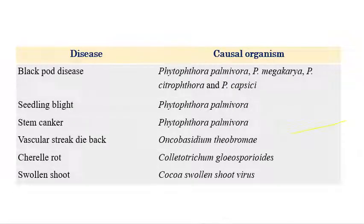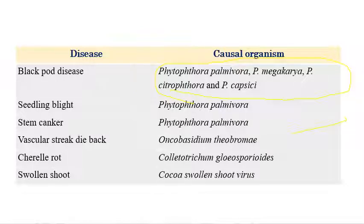These are the important diseases in cocoa. The first one is Black Pod disease, caused by various species of Phytophthora: P. palmivora, P. megakarya, P. citrophthora, and P. capsici. Seedling blight and stem canker are also caused by P. palmivora. Vascular streak dieback is caused by Oncobasidium theobromae, cherry rot by Colletotrichum gloeosporioides, and finally Cocoa Swollen Shoot is caused by Cocoa Swollen Shoot Virus.